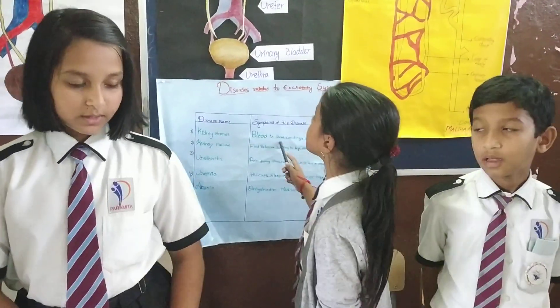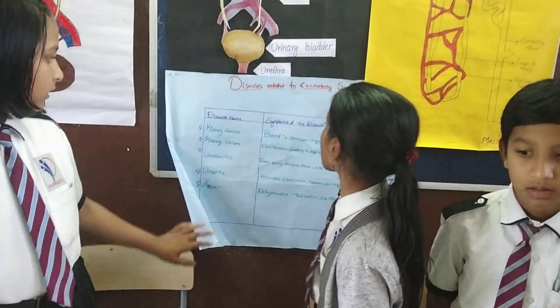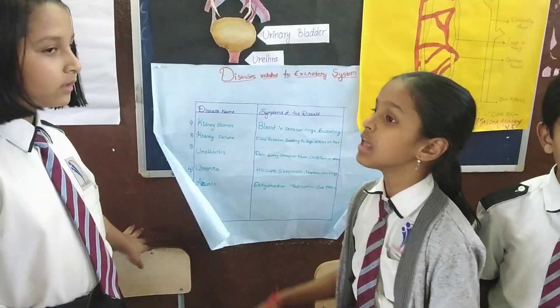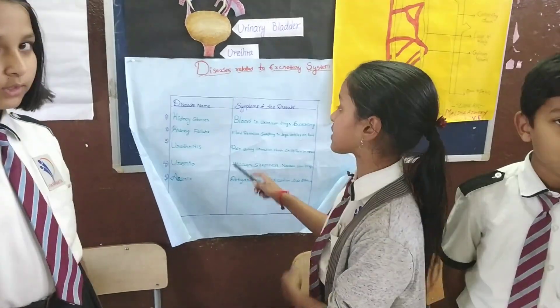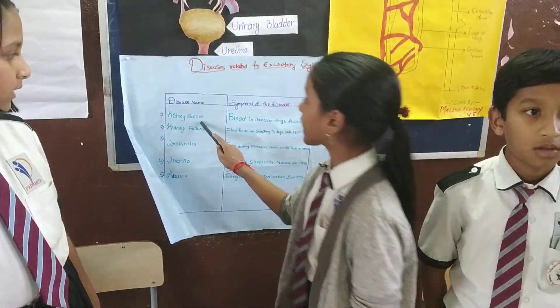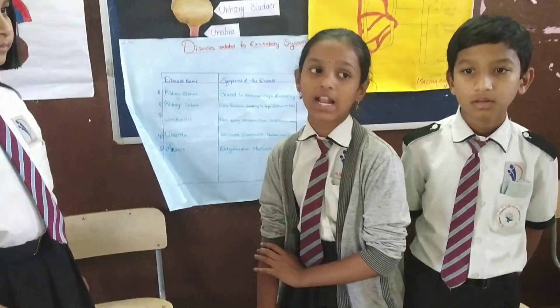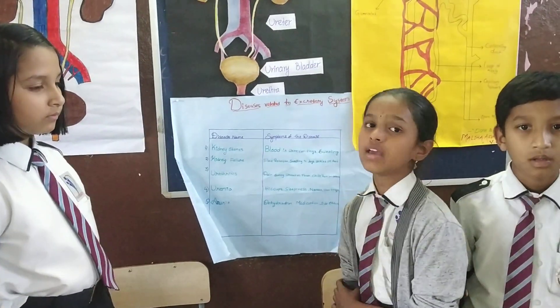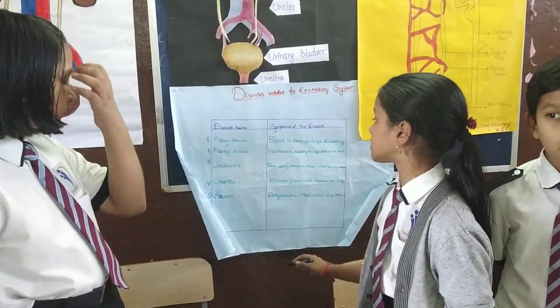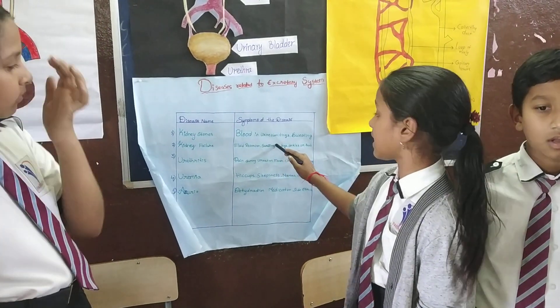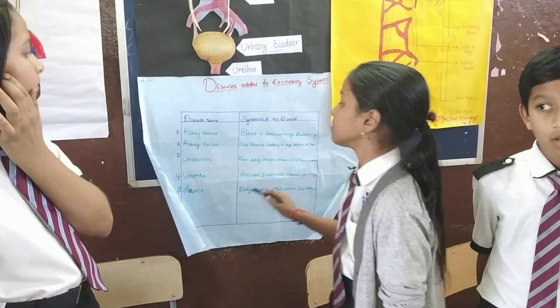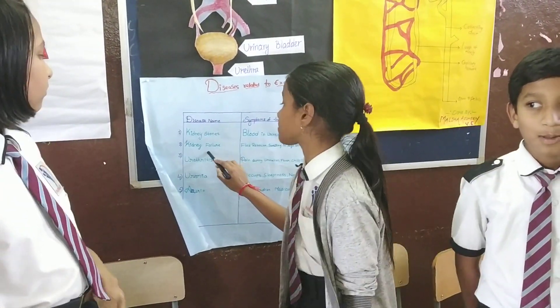There are many diseases related to the excretory system. We get kidney stones when calcium levels are too high in our body. The symptoms of kidney stones are bleeding, nausea, vomiting, and sweating.